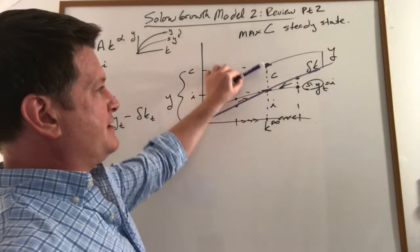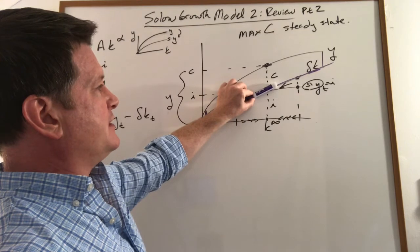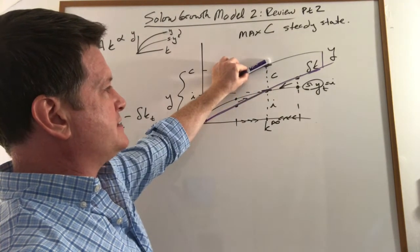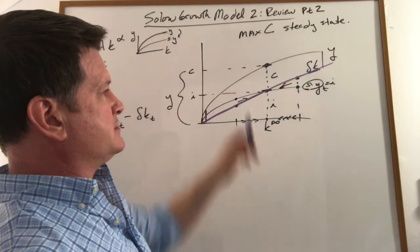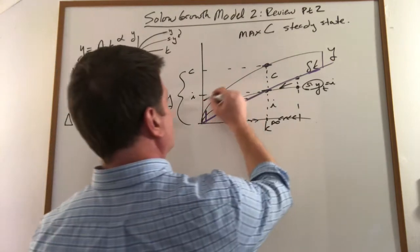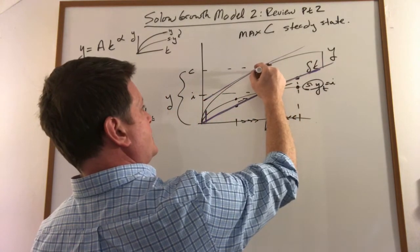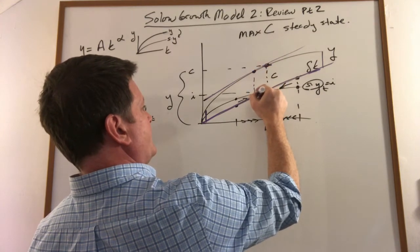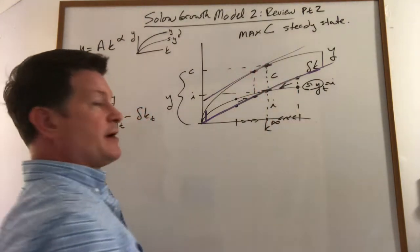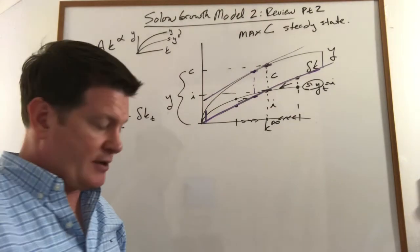Graphically, it should be obvious that that will occur wherever this line is tangent to this. So in this graph, if I shifted this line over, it looks like it would probably happen somewhere right around there would give me my maximum consumption. So let me show you how we do that.